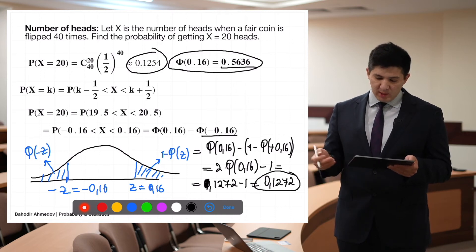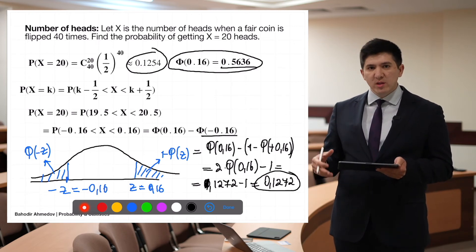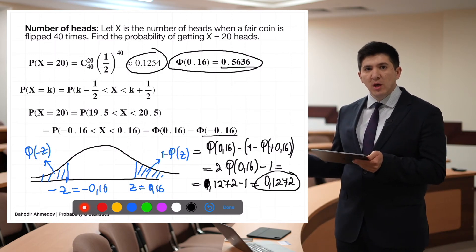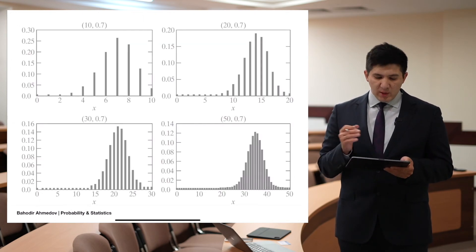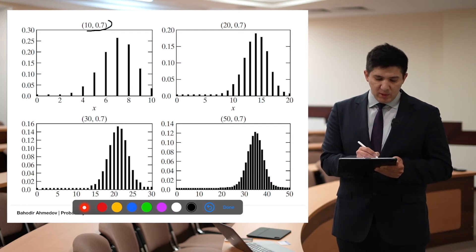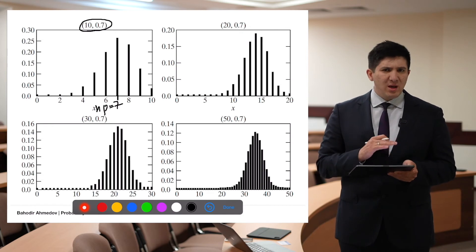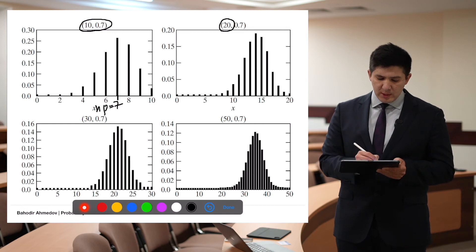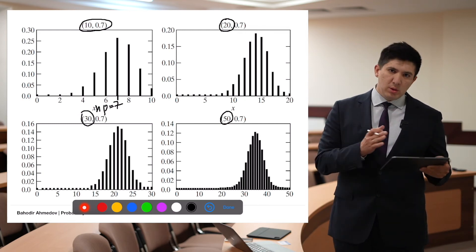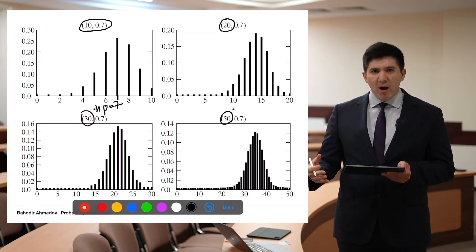So we can approximate discrete variables using continuous distributions. Looking at the graphs: for n=10 and p=0.7, the binomial doesn't look like a normal. But as n increases to 20, 30, 50, and larger, the binomial becomes very close to the normal distribution, perhaps slightly skewed. This is exactly what the de Moivre-Laplace theorem tells us.